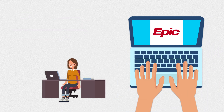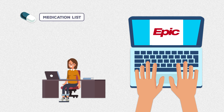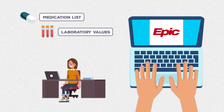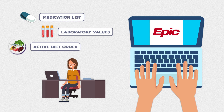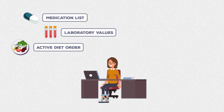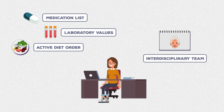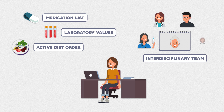Other information you'll want to look at prior to the interview includes the medication list, laboratory values, the active diet order, and the documentation of how much the patient has been eating while hospitalized, if it's available to you. You'll also want to go through the recent notes from members of the interdisciplinary team, like nurses, doctors, social workers, and speech-language pathologists.